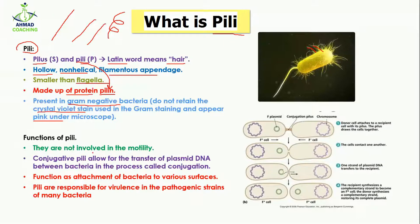Now, what are the functions of pili? They are not actually involved in motility — meaning they are not involved in the movement of unicellular organisms. They are actually involved in the transfer of plasmid DNA between bacteria in the process of conjugation.